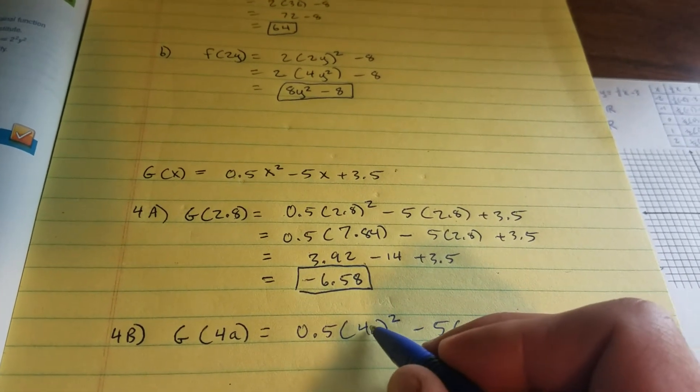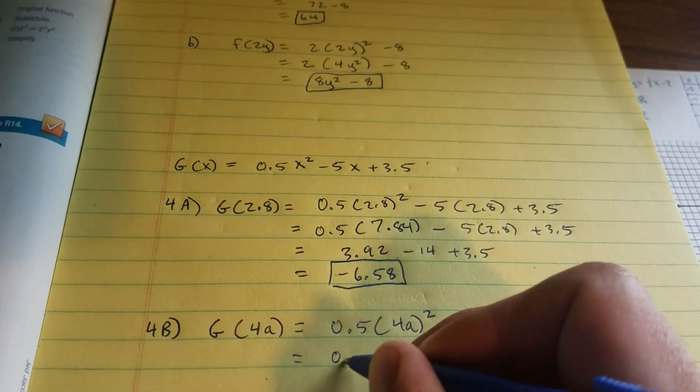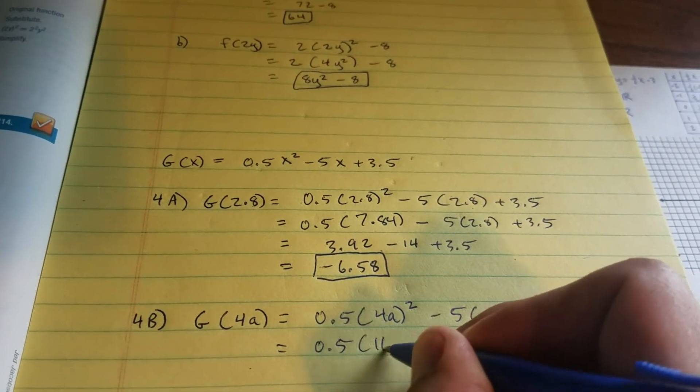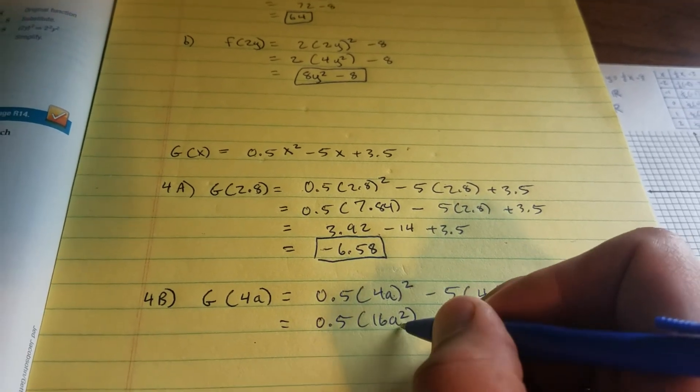Remember, the power goes to both of these two. So it's going to equal a half times 16a squared. 4 squared is 16, a squared is, well, a squared.